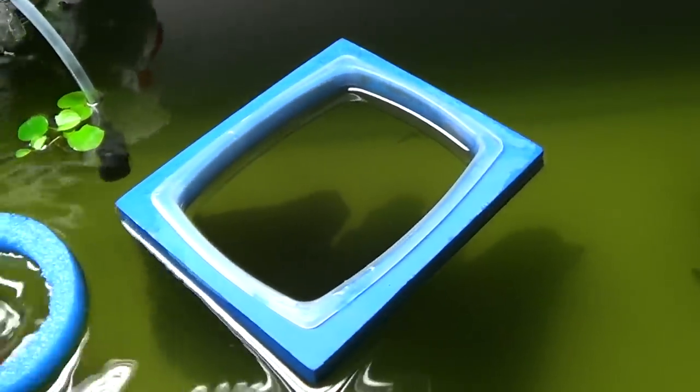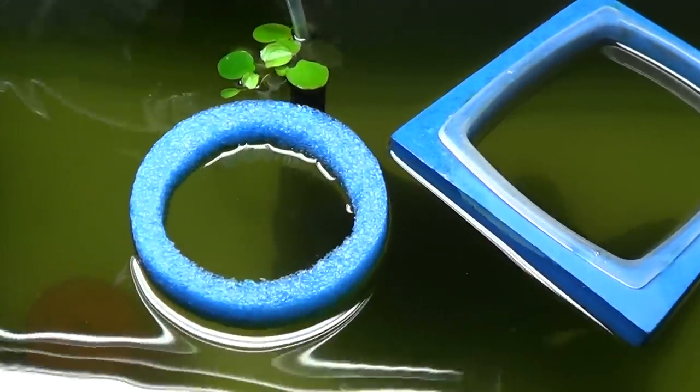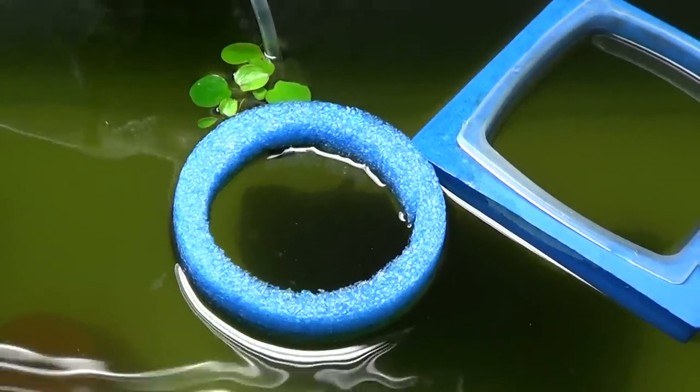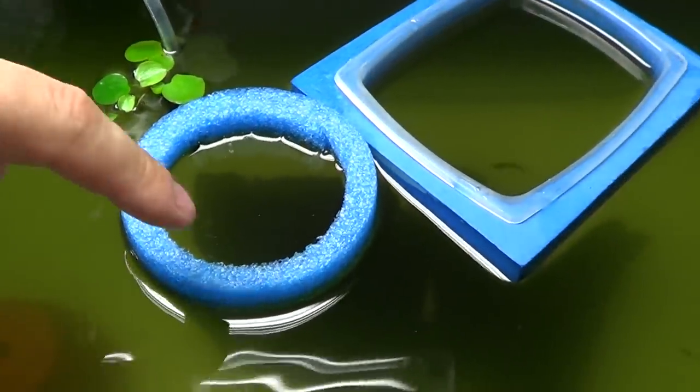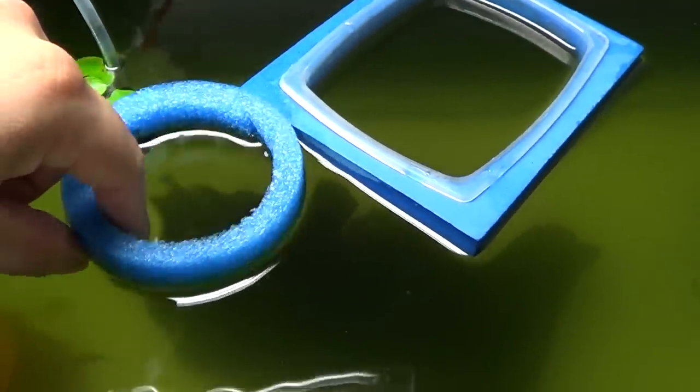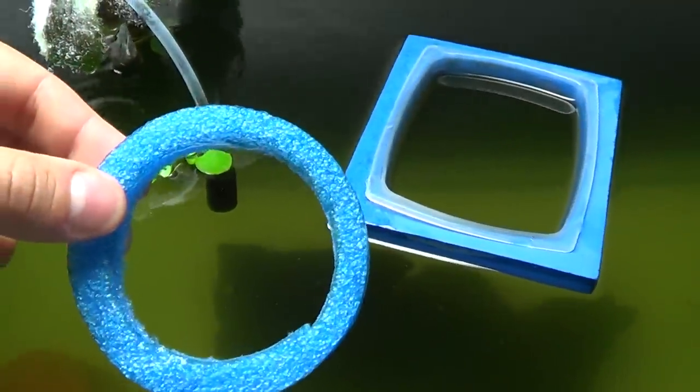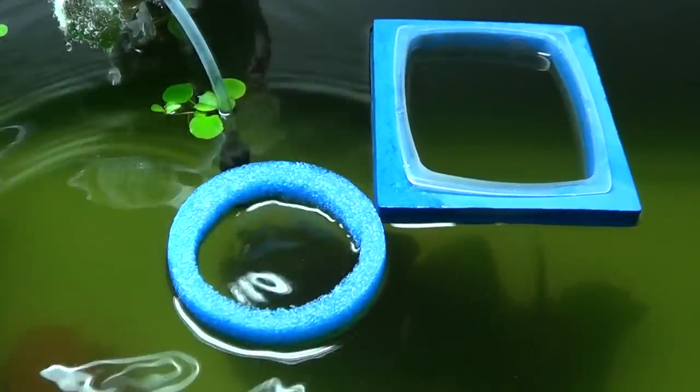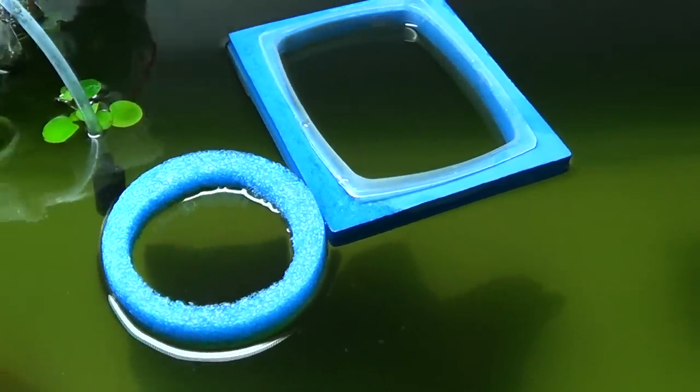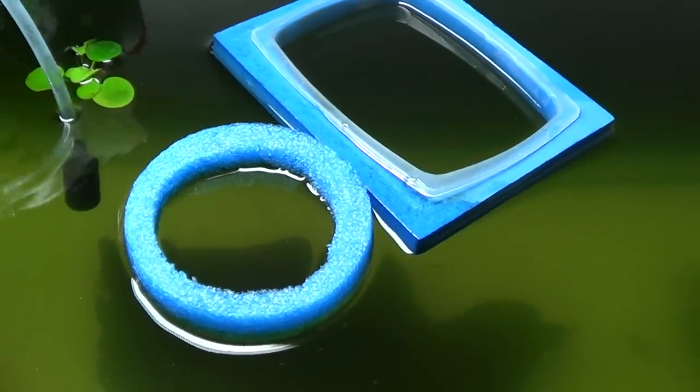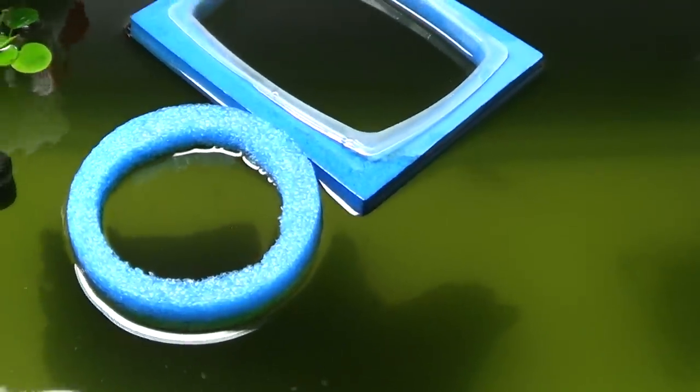Now, you can accomplish the same thing for just a few pennies by using a pool noodle and just cutting out the middle as much as possible so that all you leave is a little bit of a ring on the outside. Obviously, it floats just as well, and you can get them in various sizes.